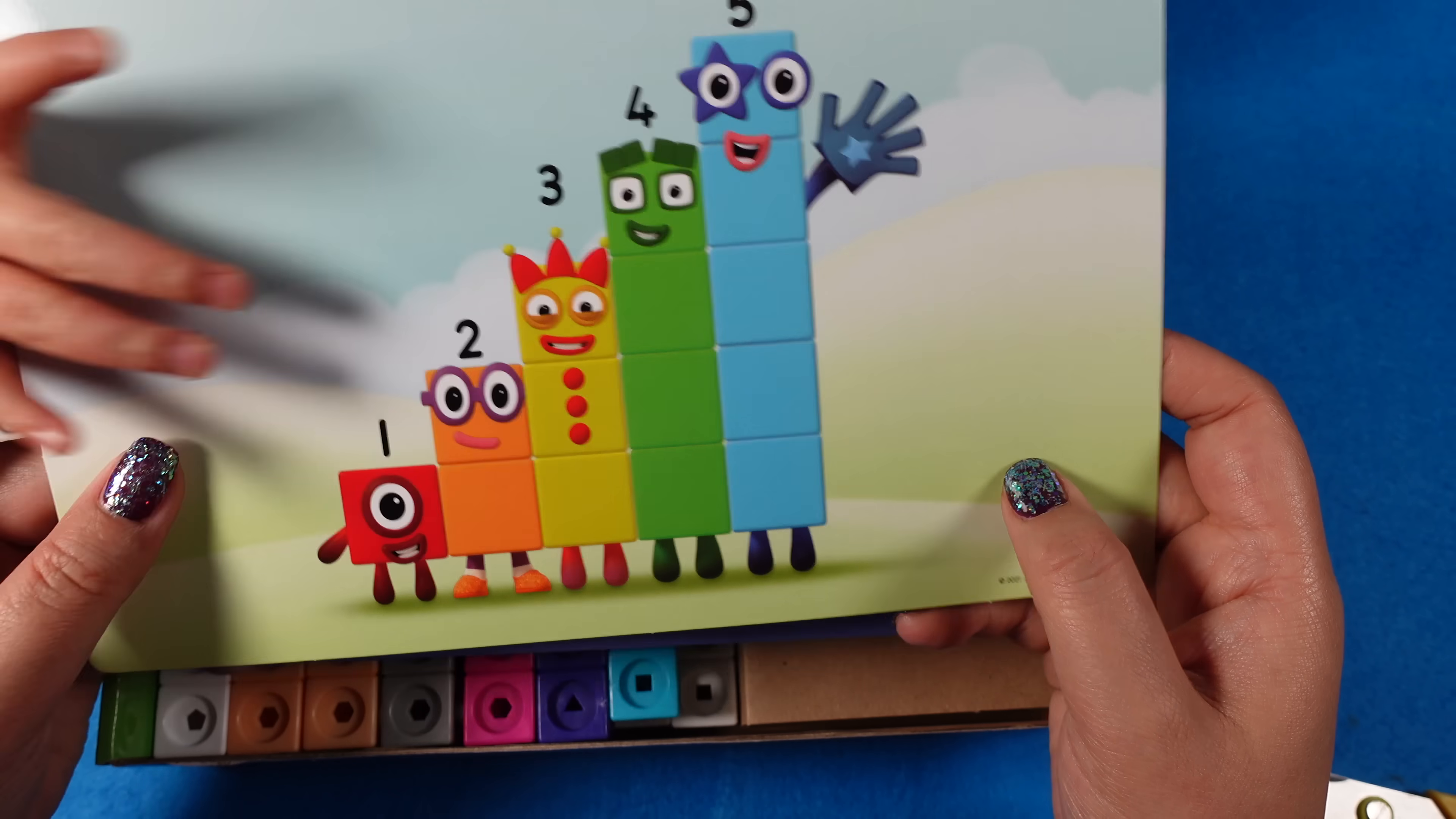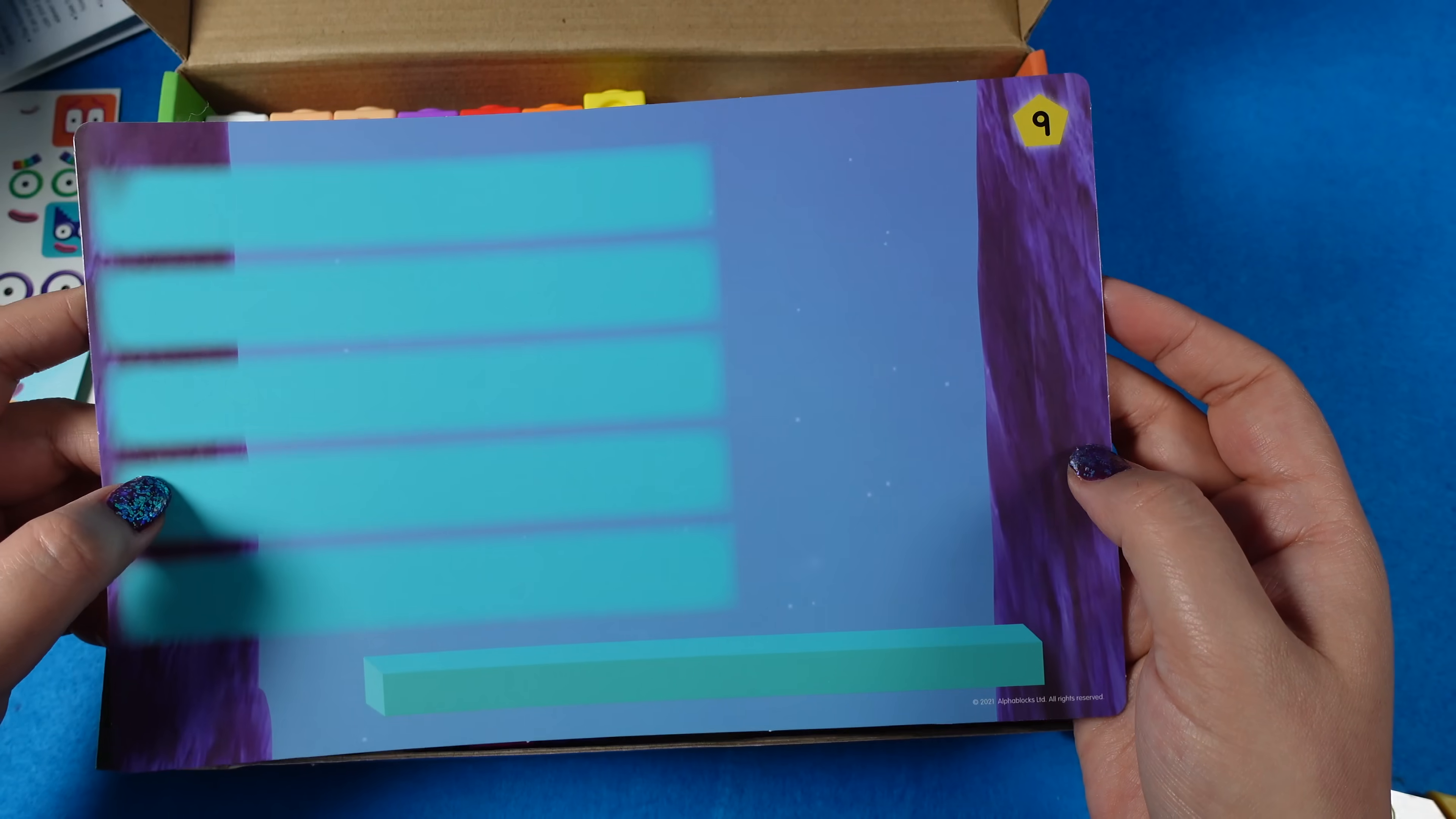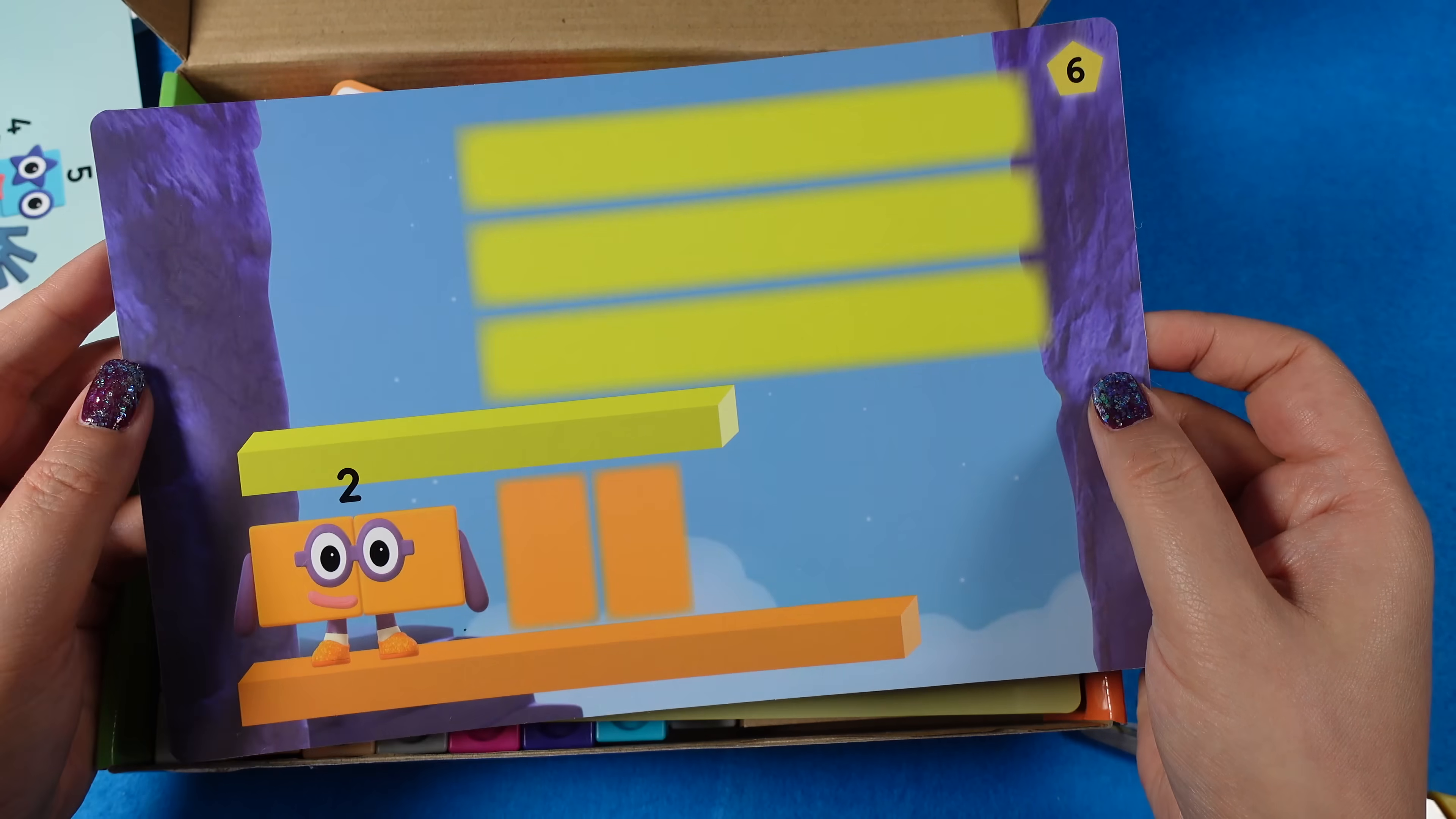I like how each of the cards are numbered on the different sides to correspond with a different activity. So that's number 12, and then this is number 10. So they're really bright and colorful cards with different scenes from the series.